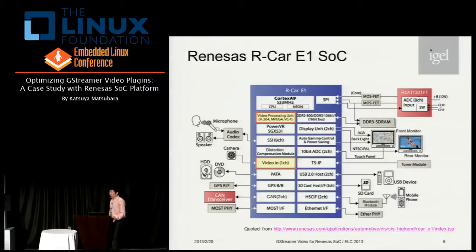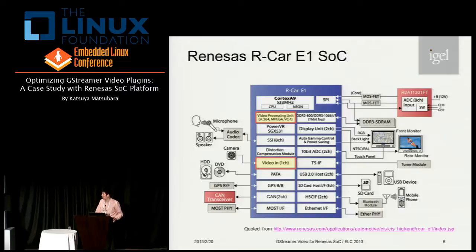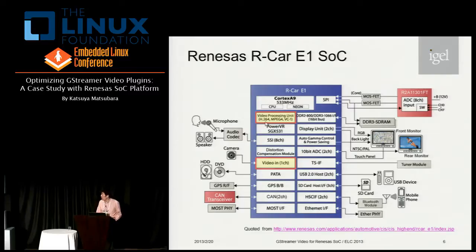Let me introduce my target platform. The Renesas ArcaE1 offers an entry-level automotive system realized on the SOC. This SOC has a Cortex-A9 single core and controllers for various peripherals, plus hardware accelerators for media and graphics. I'd like to focus on the video processing unit. The video processing unit can work as a decoder hardware with small firmware. The VIN device — Video IN, or VIN for short — can be used to capture video from a camera through analog video input.